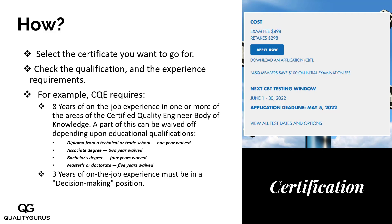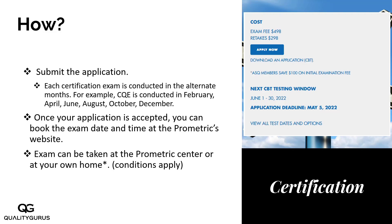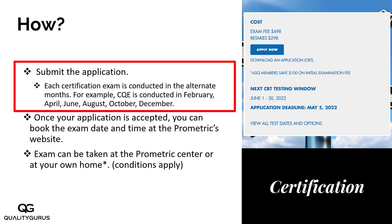Once you have decided that you qualify for this exam, the next thing will be submitting the application. ASQ conducts the CQE exam in alternate months. This exam is not conducted in January — it is conducted in February, April, June, August, October, and December. So these are the months this particular exam is conducted by ASQ.